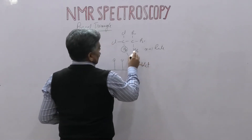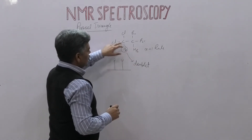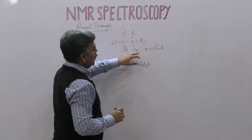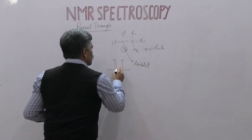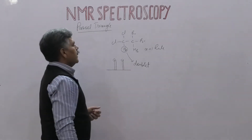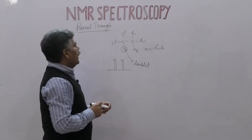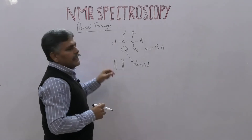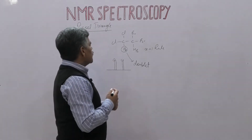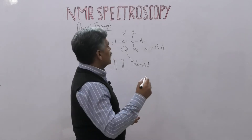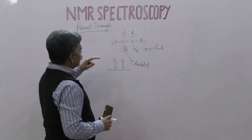The same situation applies to HB: again we have one hydrogen present at the adjacent carbon, and according to the n+1 rule it also gives us a doublet. So both absorption signals are separated into two lines instead of one. The intensity of these two lines can be determined by Pascal triangle, which is a mathematical mnemonic that helps us determine the intensity of these lines.